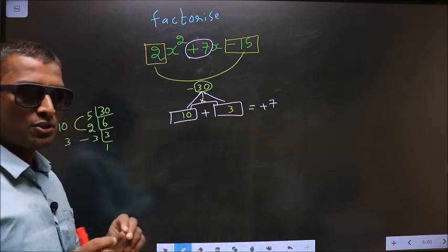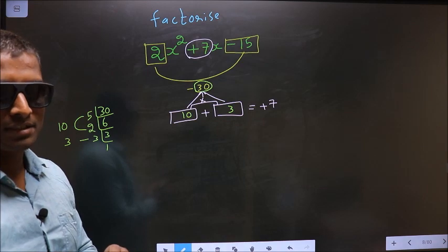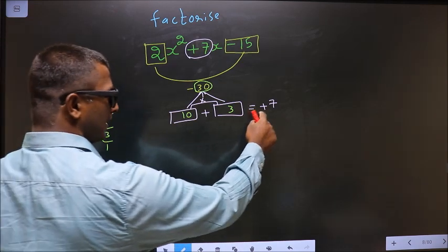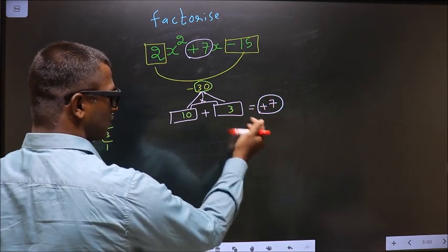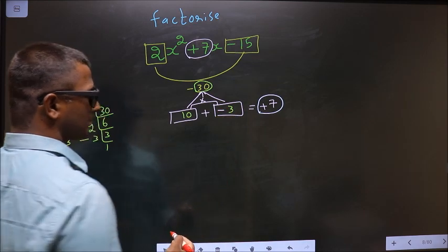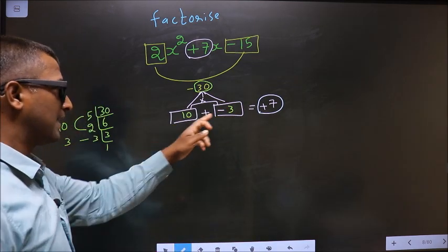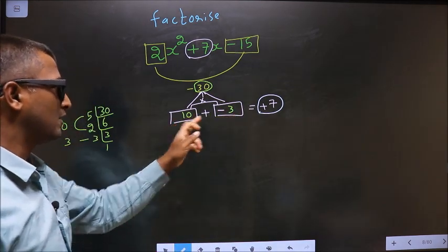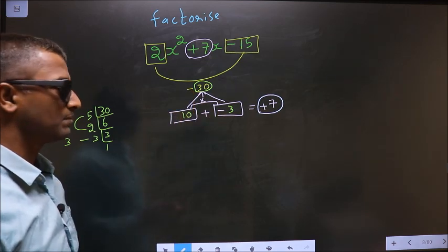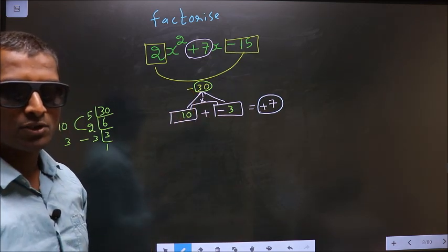Now you should adjust the signs. To get here plus 7, you should put minus before 3. 10 minus 3 is plus 7, 10 into minus 3 is minus 30. So now the signs are also adjusted.